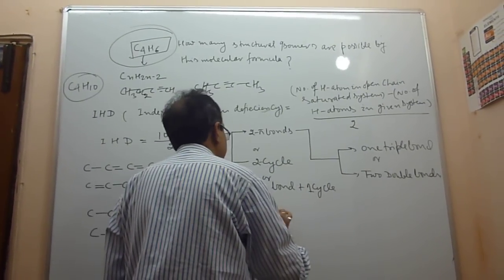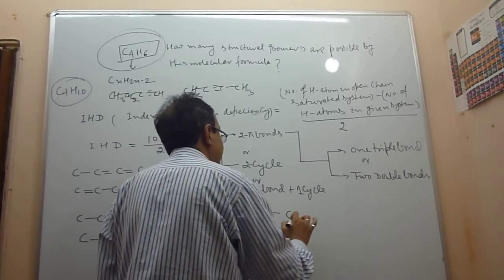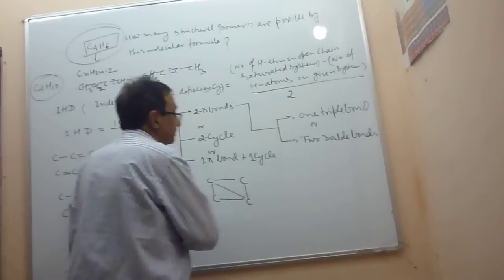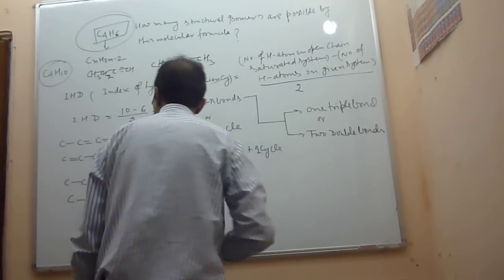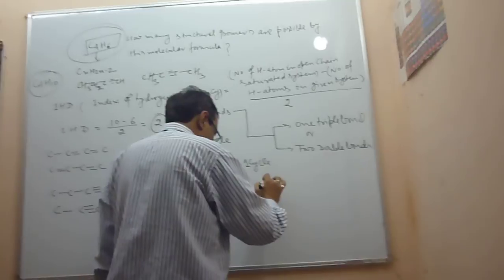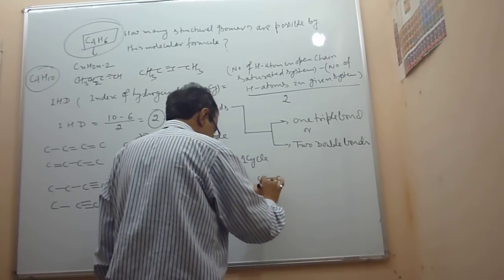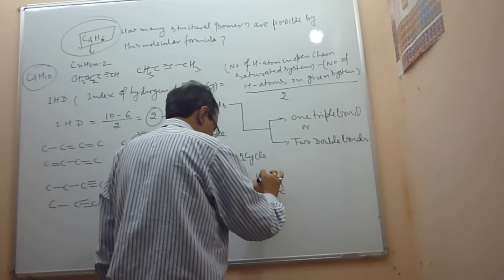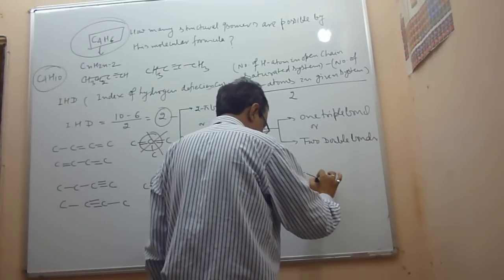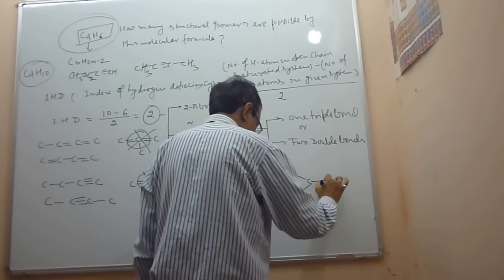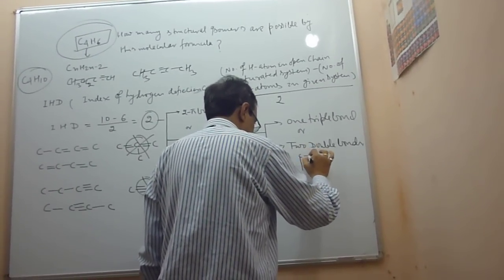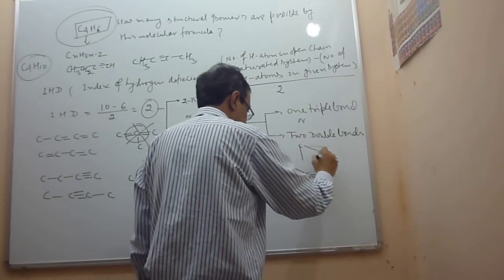Now for 2 cycles: in the form of a bicyclo compound — that is 1 bicyclic structure. Then for 1 cycle plus 1 pi bond: one cycle with one pi bond gives another isomer, and another arrangement of 1 cycle plus 1 pi bond gives yet another isomer.